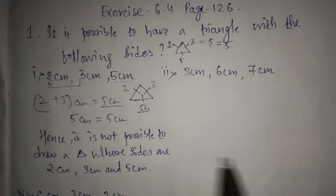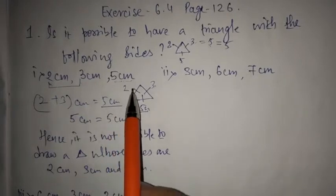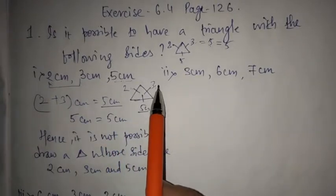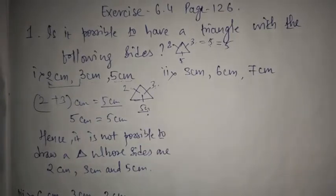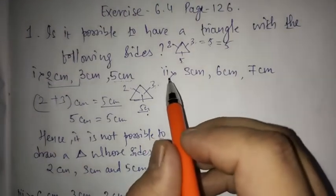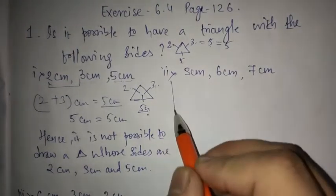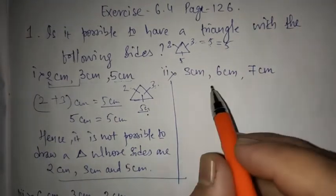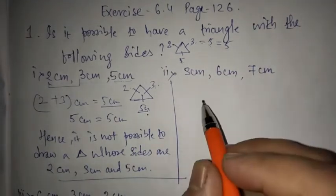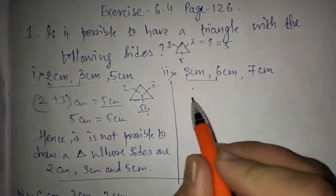I hope you understood this. What is the concept? First, you need to add 2 sides. If the sum is greater than the other side, then and only then you say the triangle is possible to form. Now let us look at problem number 2. It is 3, 6, and 7.